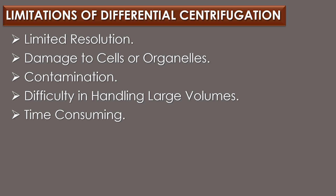The third limitation is contamination: differential centrifugation can result in contamination of the separated components with other materials present in the sample. For example, if the sample contains bacteria, they may be present in the final preparation of the separated component. The fourth limitation is difficulty in handling large volumes: differential centrifugation requires the use of a centrifuge, which can be difficult to operate with large volumes of sample. The fifth limitation is that it is time-consuming, especially if multiple rounds of centrifugation are required to obtain a pure preparation of the desired component.